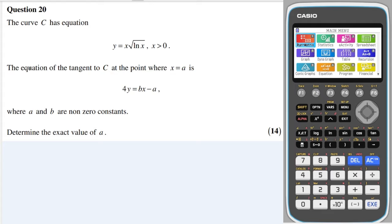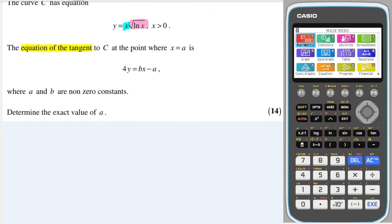So the first thing I can see that jumps out is the equation of a tangent. And to work out the equation of a tangent, we first need to find the gradient, which means we need to differentiate this function. This function is a product, has two parts to it. It has x multiplied by the square root of ln x. So we need to split it up and use the product rule in order to differentiate.